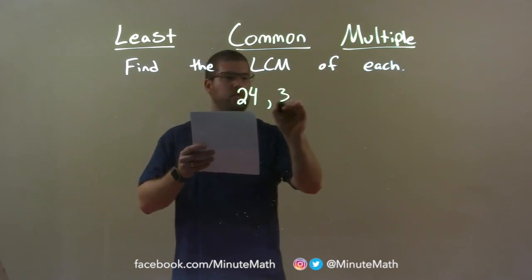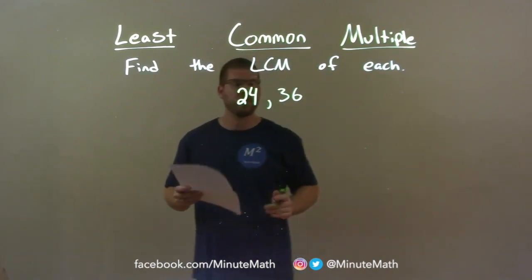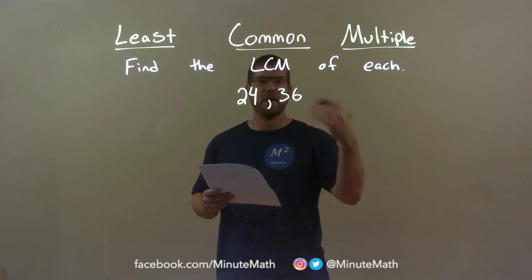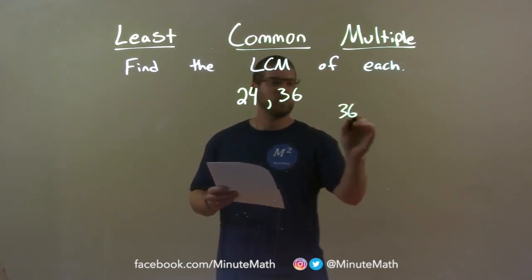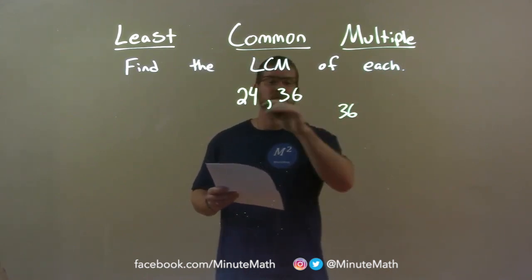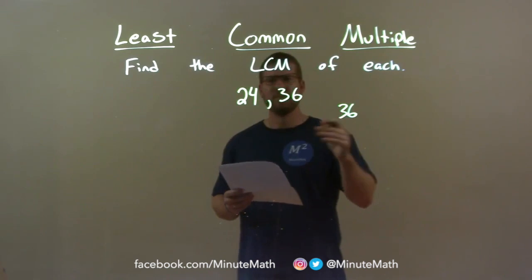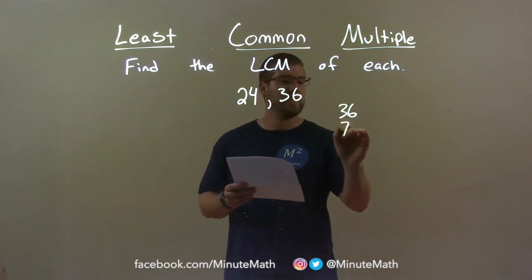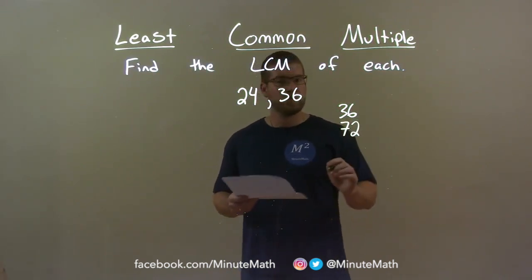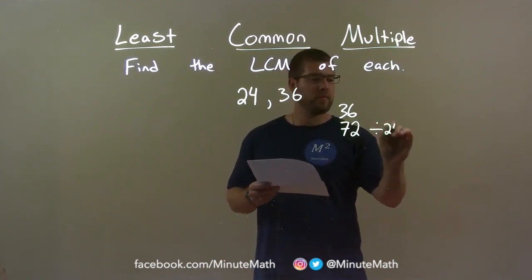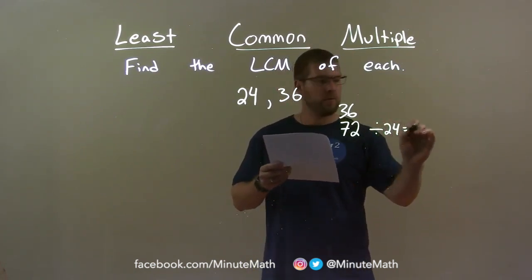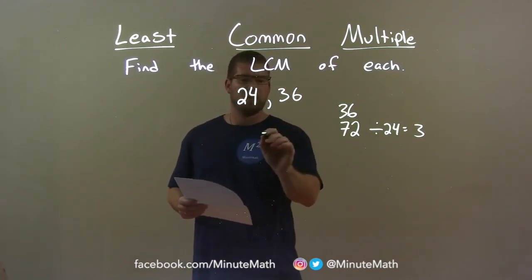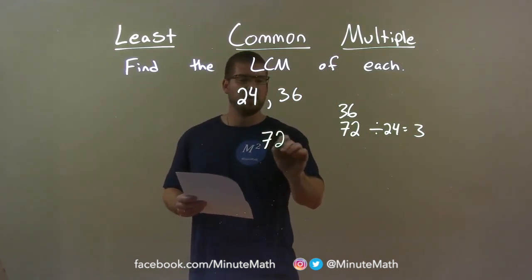24 and 36. I take the larger of the two numbers, 36, and go through its multiples to see which one is divisible by 24. 24 does not go into 36. The next multiple is 72. 72 divided by 24 equals 3. So 72 is divisible by 24, and my answer here is just 72.